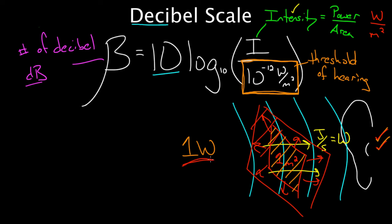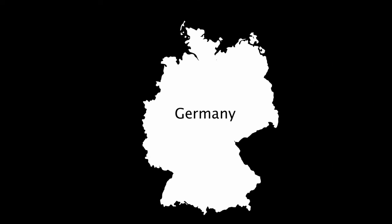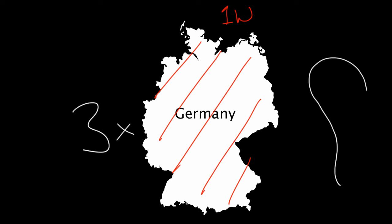How large of an area could this one watt be spread over and still be intense enough for the human ear to hear it? What do you think? Football field? I don't know. A city? No, it turns out. If you do the calculation, I suggest you do. It's interesting. You would get that you can spread one watt over the entire land area of Germany about three times over. And still, it's intense enough for the human ear to hear. That's how unbelievably sensitive our ears are. It's actually unbelievable. I told you it was unbelievable. I can hardly believe it myself.